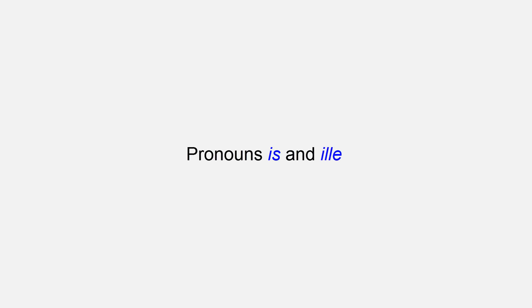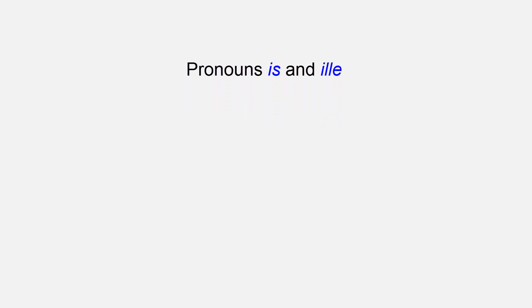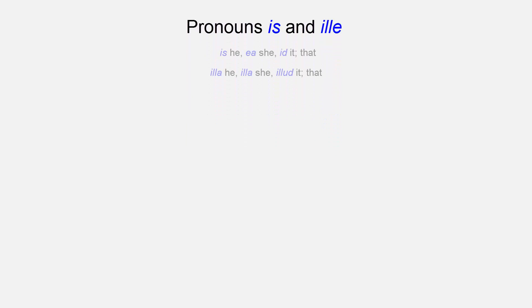The pronouns is and illa. Is and illa both mean he, she, it, or that. However, illa is more emphatic than is, meaning 'that over there,' and the use of illa indicates a change of subject.